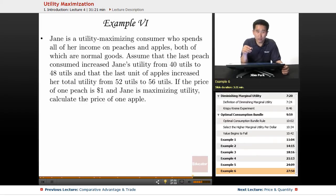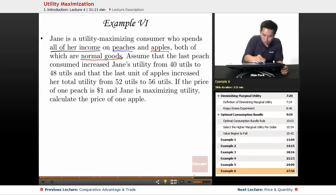The final example with marginal utility per dollar involves Jane, a utility-maximizing consumer who spends all of her income on peaches and apples, both of which are normal goods.